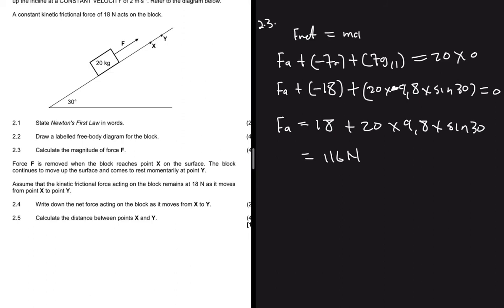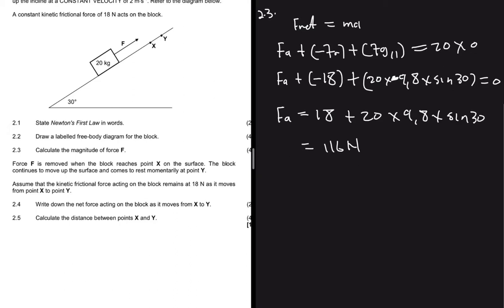For question 2.4, force F is removed when the block reaches point X. Now we only have friction and FG parallel. The block continues to move up the surface and comes to rest momentarily at point Y before it starts sliding down. Assume the kinetic frictional force remains at 18 Newtons as the block moves from X to Y. Write down the net force acting on the block as it moves from X to Y.